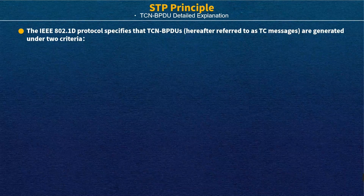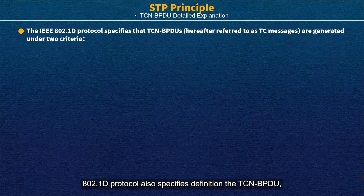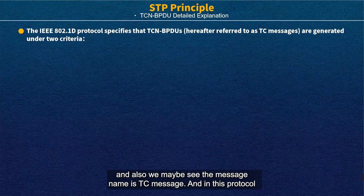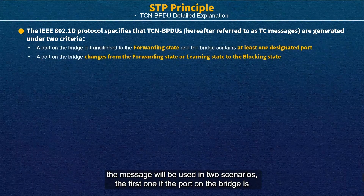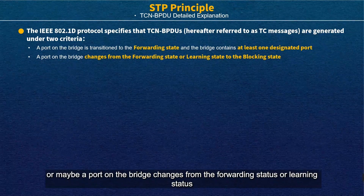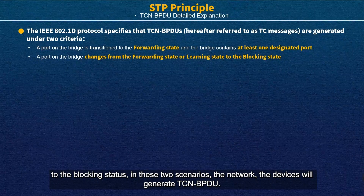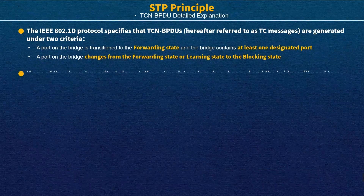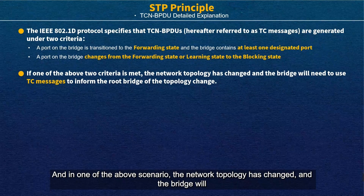The IEEE 802.1d protocol specifies the TCN BPDU, also called the TC message. This message is used in two scenarios: first, if a port on the bridge transfers to forwarding status and the bridge contains at least one designated port; or second, if a port changes from forwarding or learning status to blocking status.